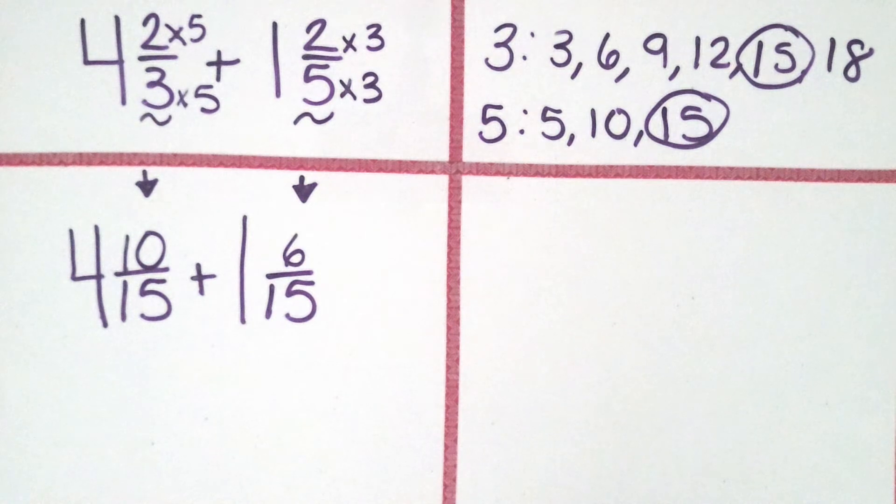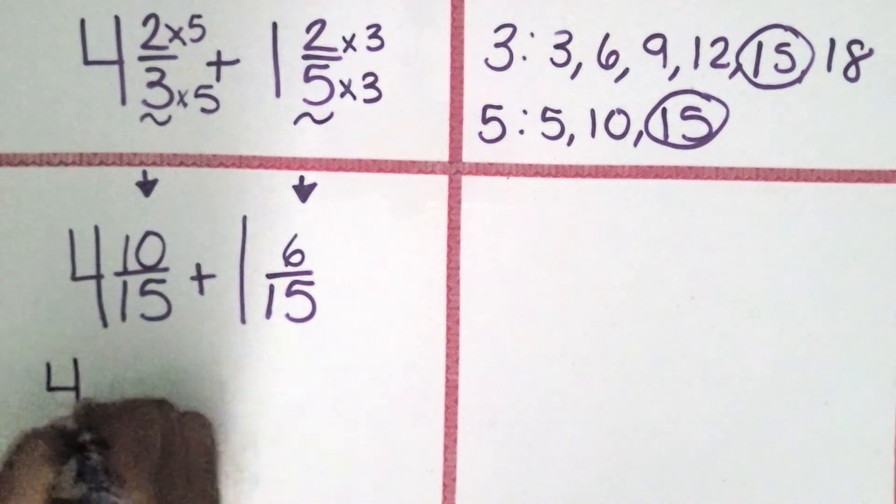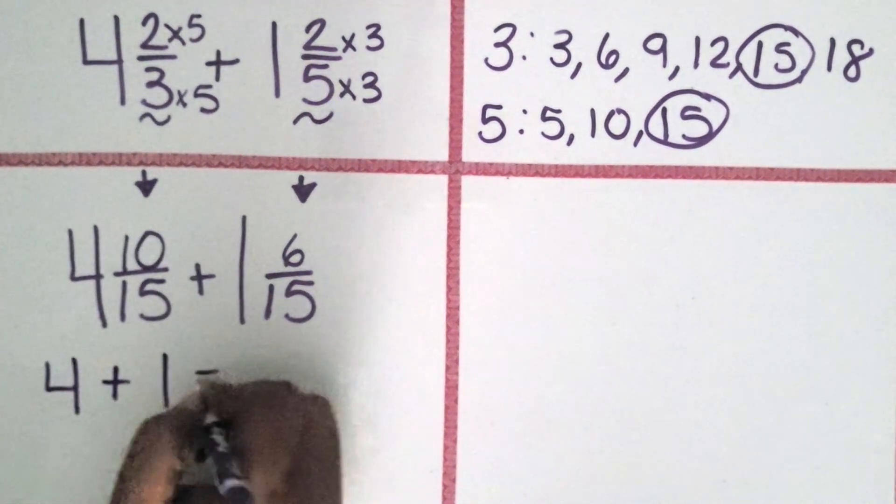Now that the denominators for both mixed numbers are the same or alike, we can finally join them together. Let's start by adding the whole numbers together. 4 plus 1 equals 5.